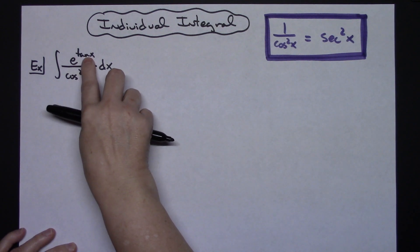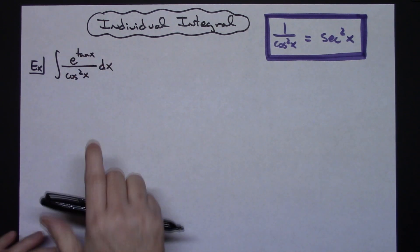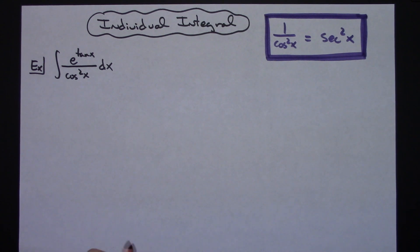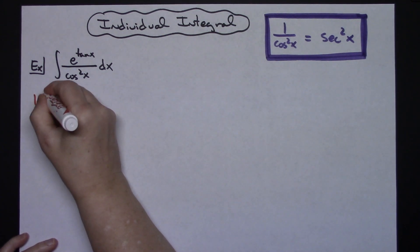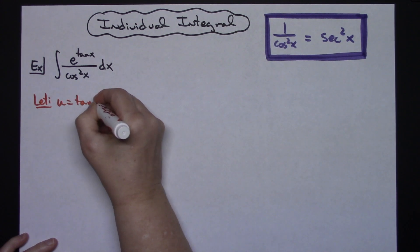I've got e raised to the tangent x right there. So I'm going to start by letting that tangent x be what I let my u be. So let u equal the tangent of x.